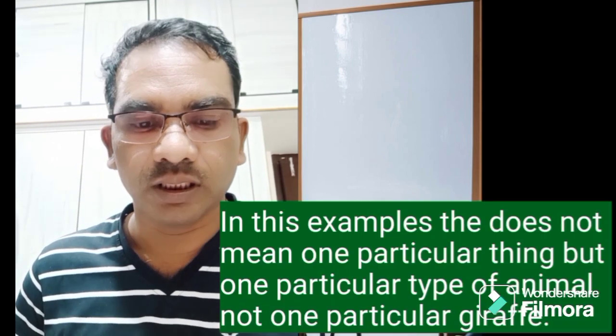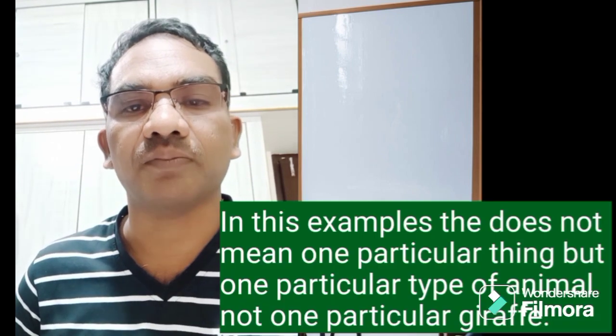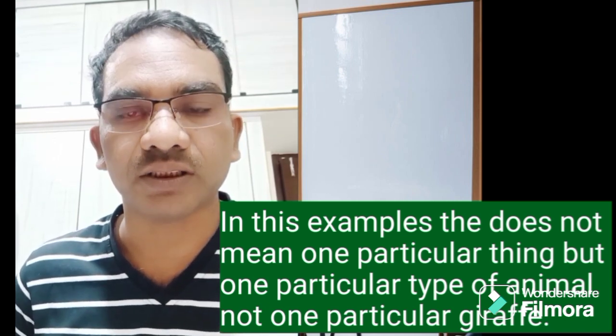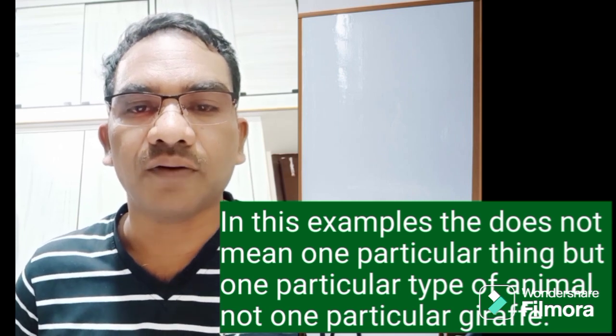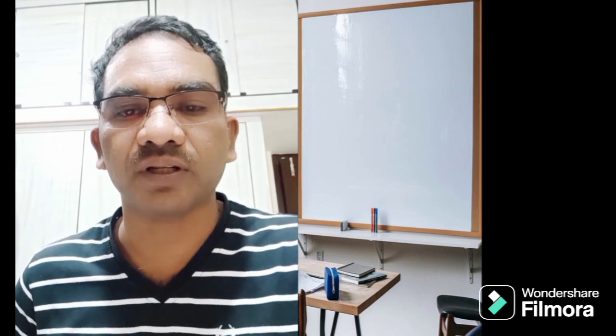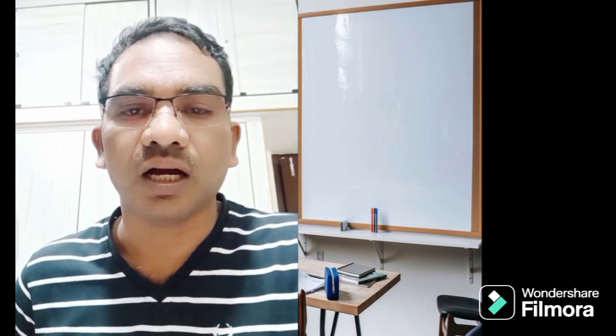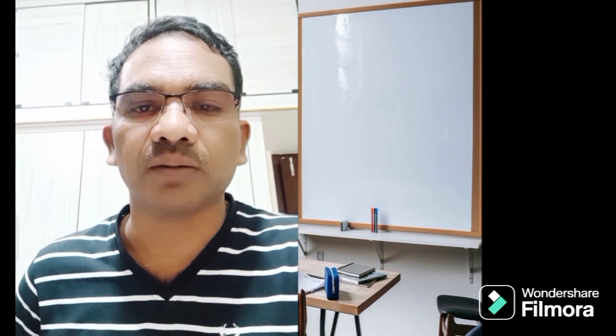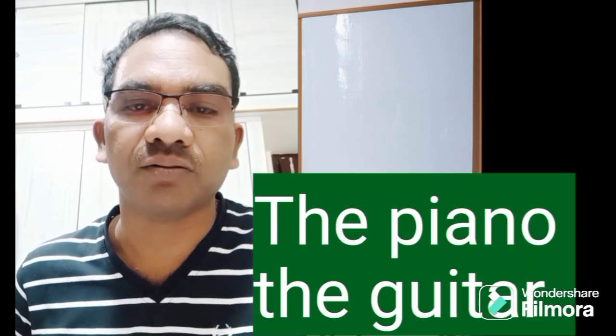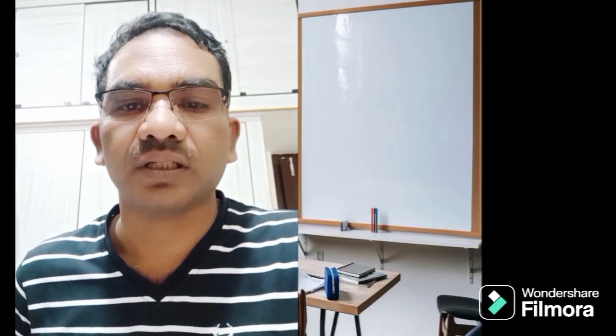These examples, THE doesn't mean that one particular animal or one particular thing. But it's about one particular type of animal and one particular type of machine. We use THE with single countable noun to indicate a particular type of machine or particular type of animal. In the same way, the piano, the guitar, etc.